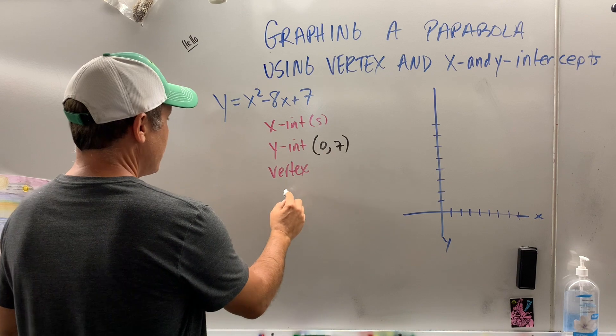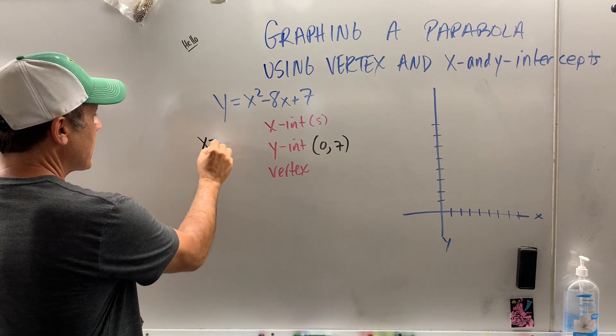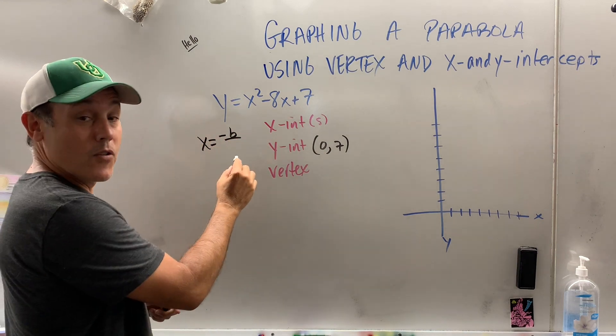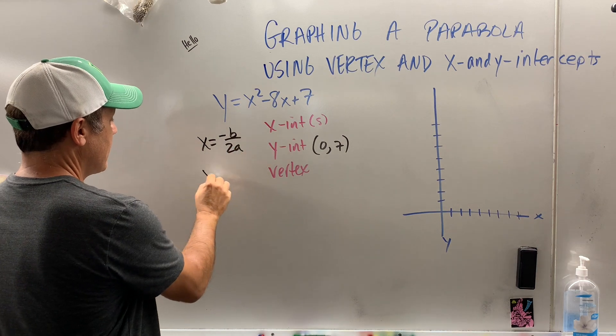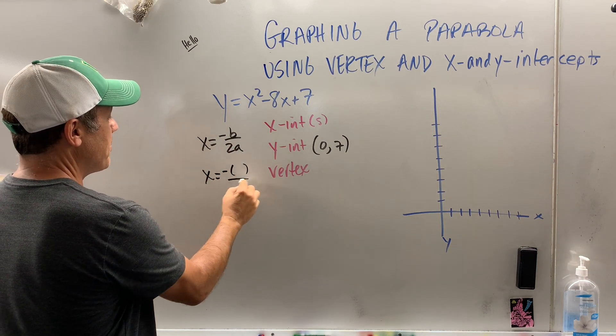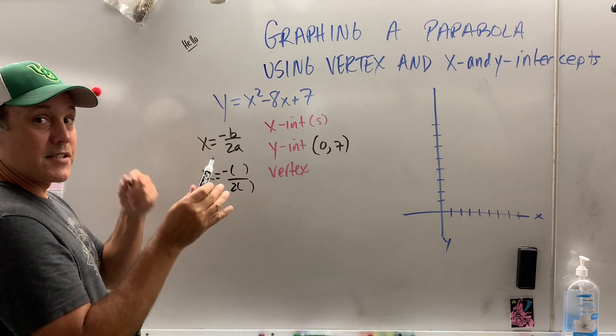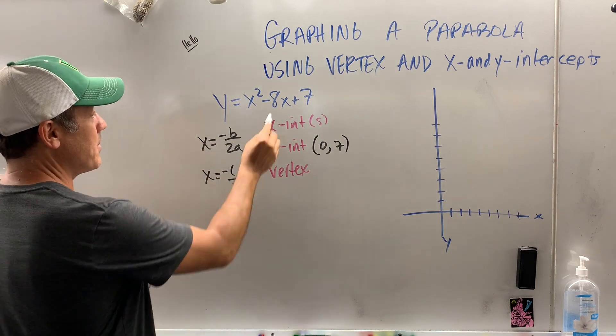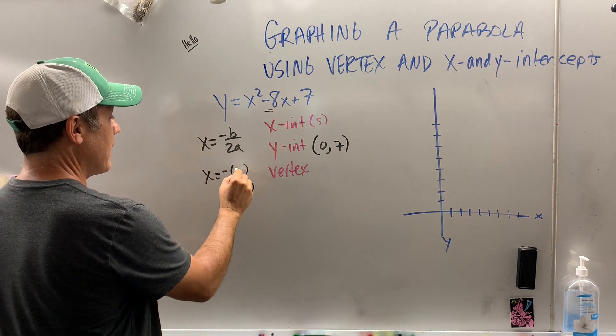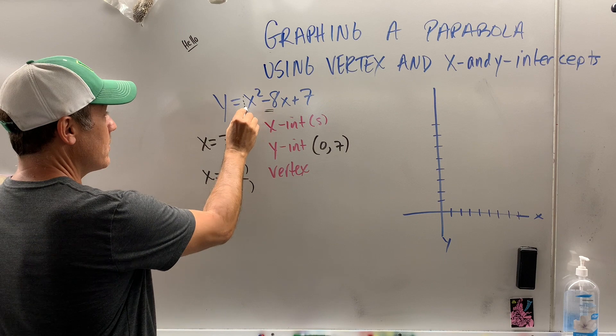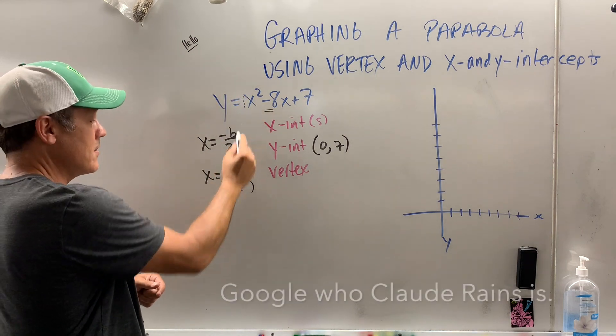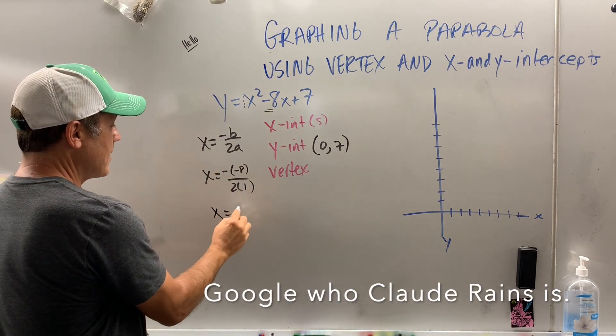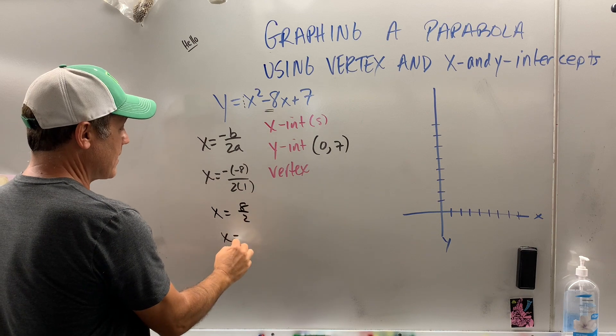The vertex, you remember, what is that? x equals negative b over 2a. Negative, what's my b value? I'm putting parentheses in my head around the variables. The b value is negative 8, and the a value is invisible 1, right? x equals 8 over 2, x equals 4.